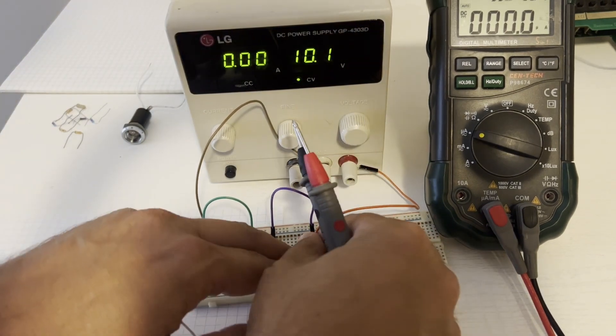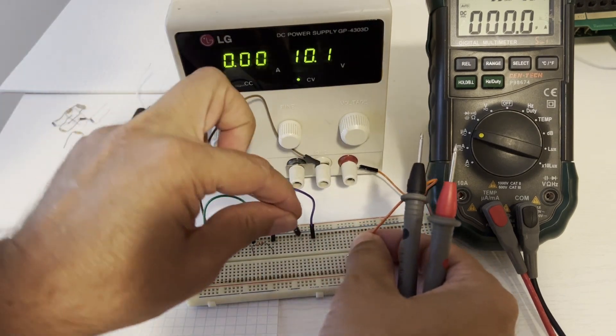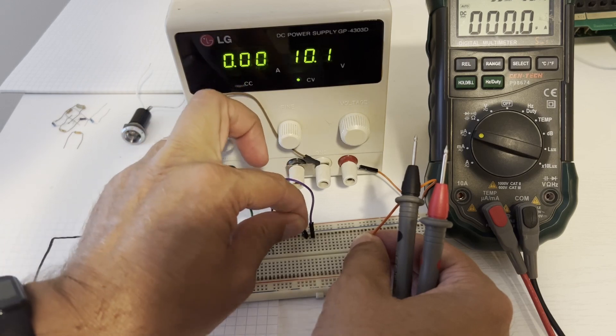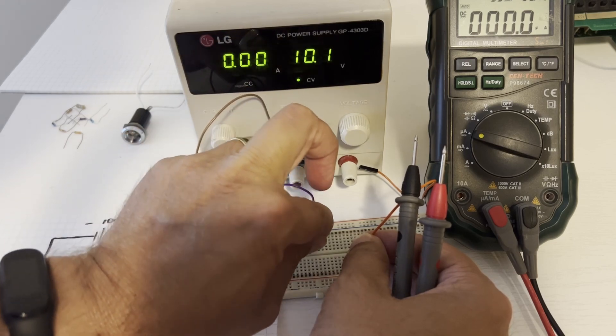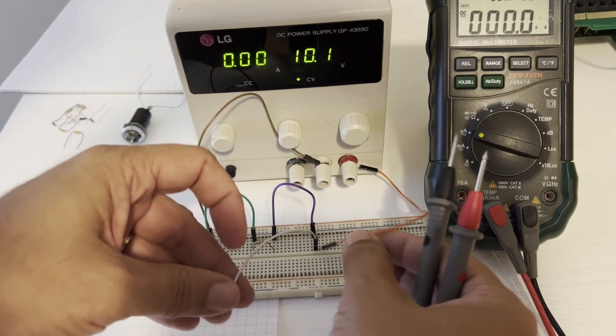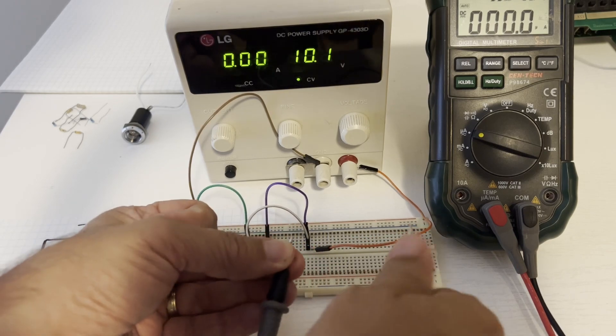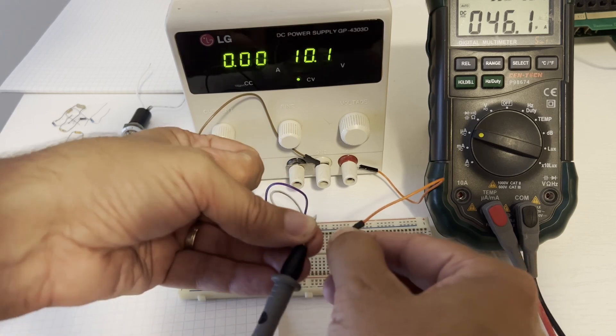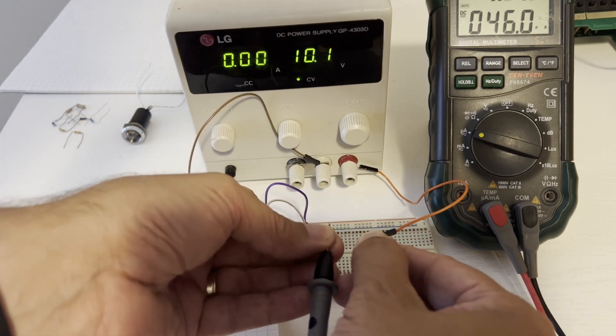To measure current, we need to connect our meter in series with the circuit. So we'll disconnect that. We'll add another wire here into our circuit. And then we'll go ahead and measure the current, our meter set to microamps in this case. So I'll measure the current flowing through. We see 46.1 microamps.